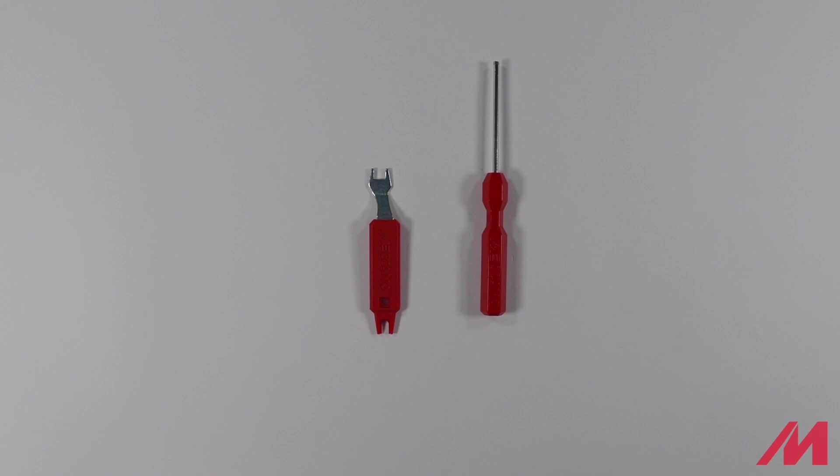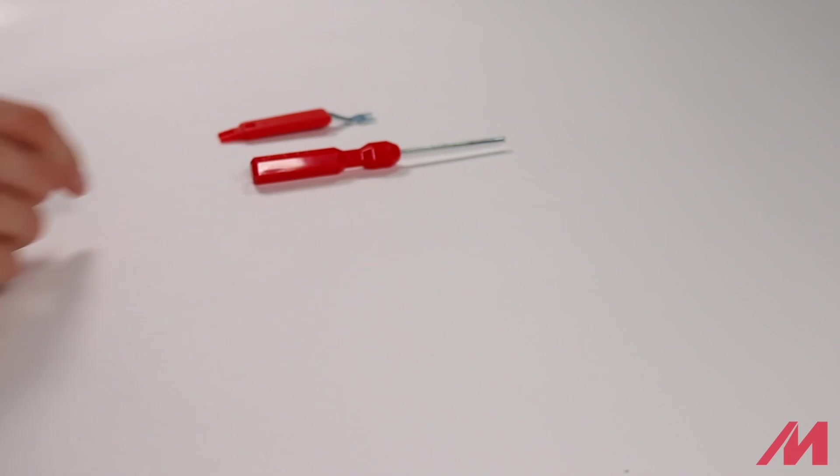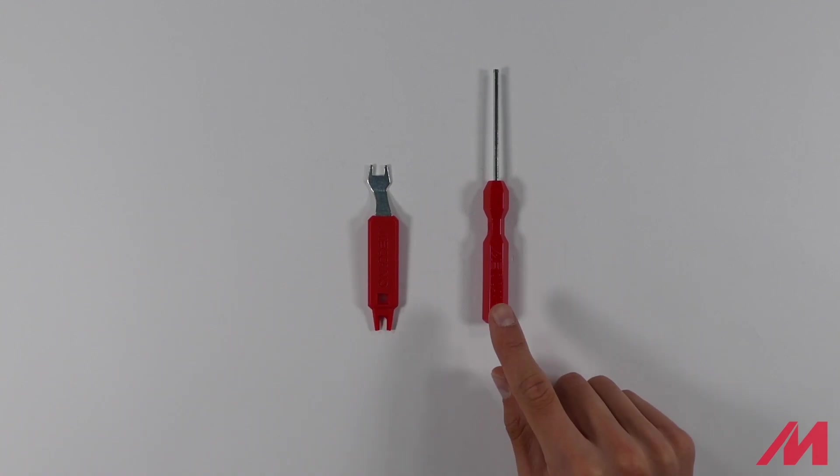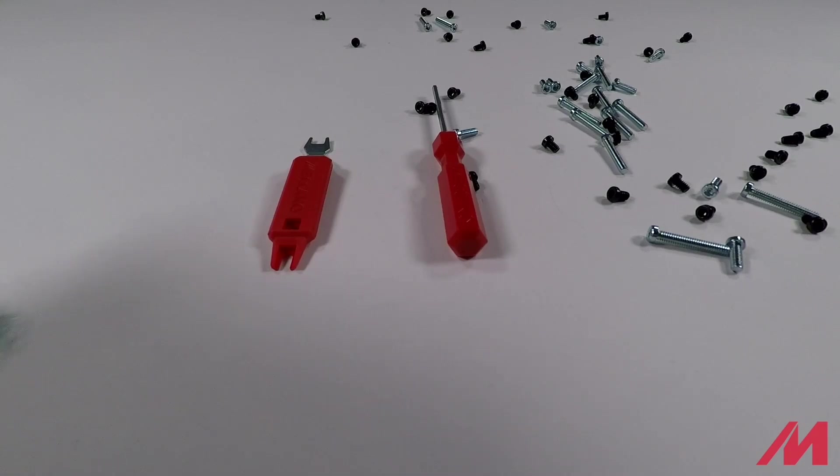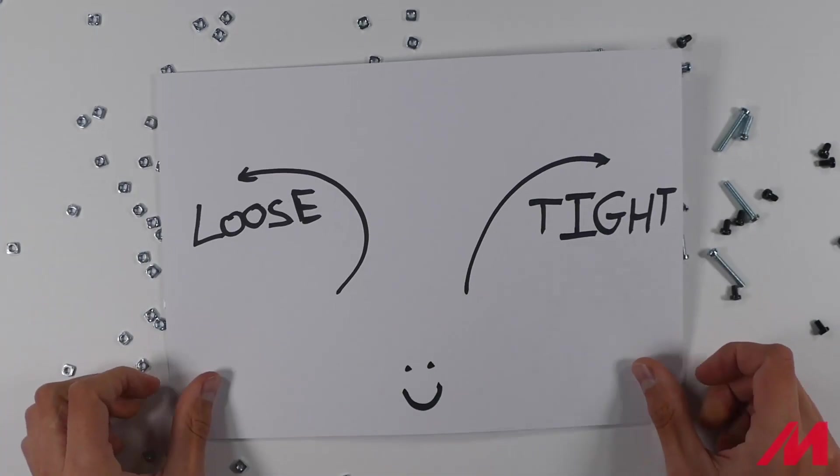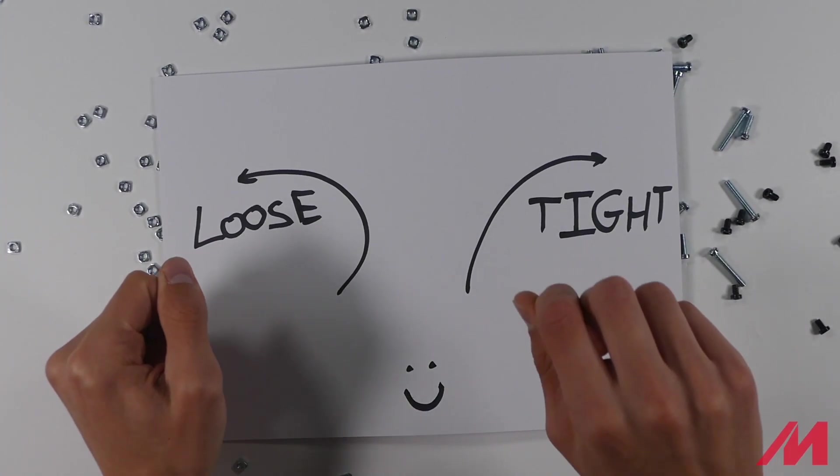In every Meccano set you get a hex key and a spanner. Your hex key is for the screws, your spanner is for your nuts. And remember, lefty loosey, righty tighty.